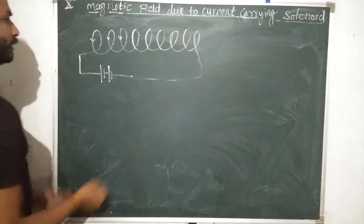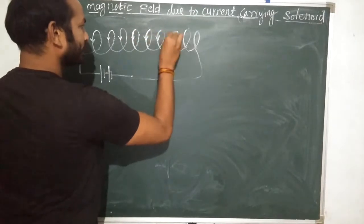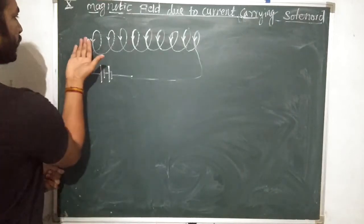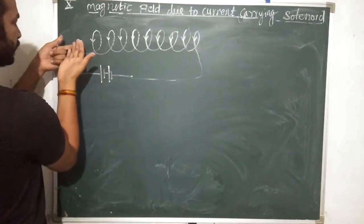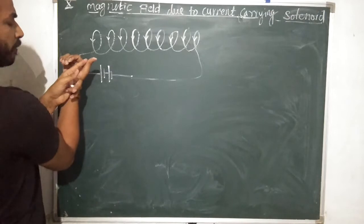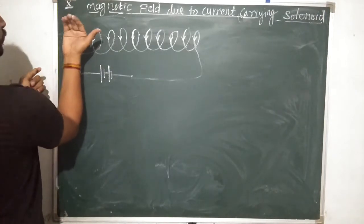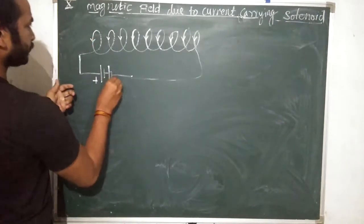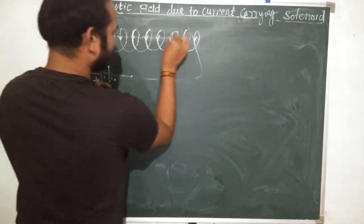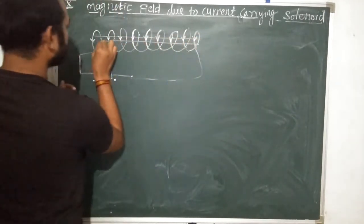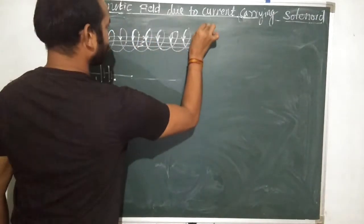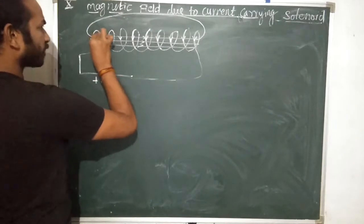Current is flowing in this manner through the solenoid. If I am using the right-hand thumb rule on this circular coil — we can consider the current direction and the thumb gives the direction of the magnetic field. The magnetic field goes straight through the center, and near the center it is a uniform magnetic field.